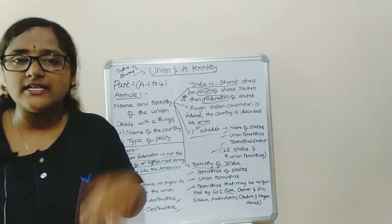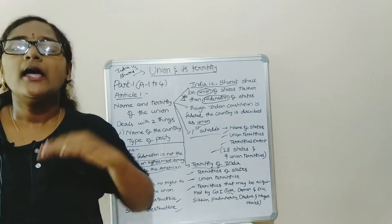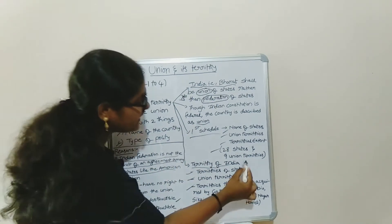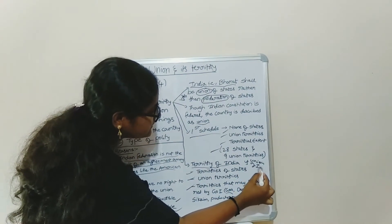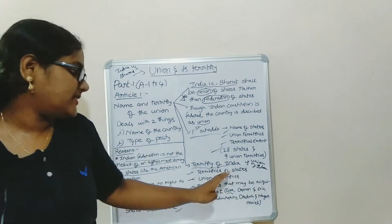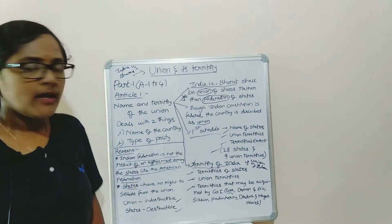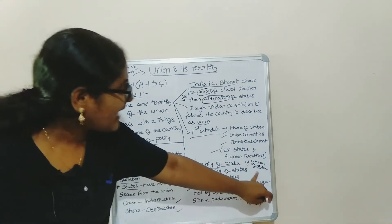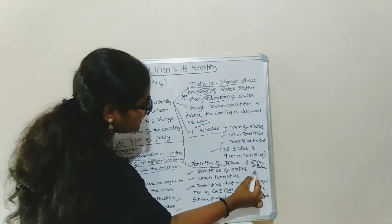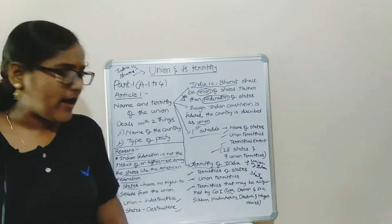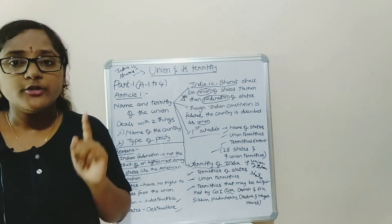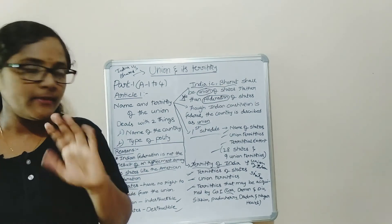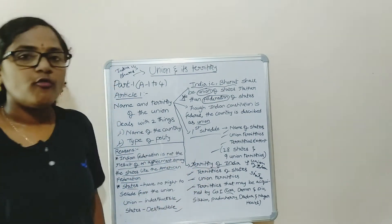The acquisition of these territories from foreign countries will be discussed in later sessions. There is another important debate: what is the difference between the territory of India versus the union of India? Which is the wider term? Obviously, territory of India is the wider term because it comprises the territories of states, union territories, and territories acquired by the Government of India. Whereas the union of India includes only states. Remember that states are members of the federal structure, but union territories are directly administered by the Government of India, that is, by the central government.